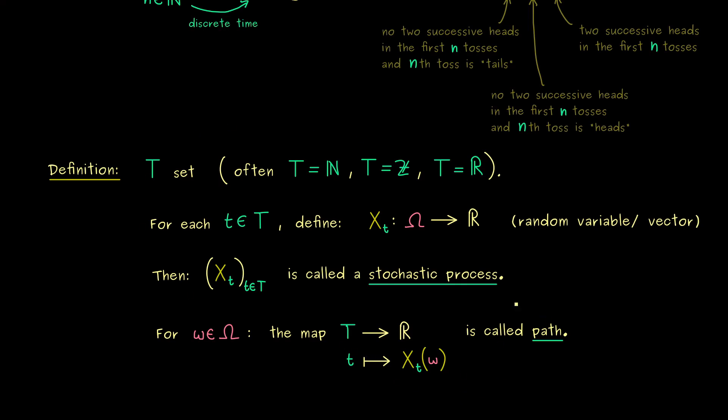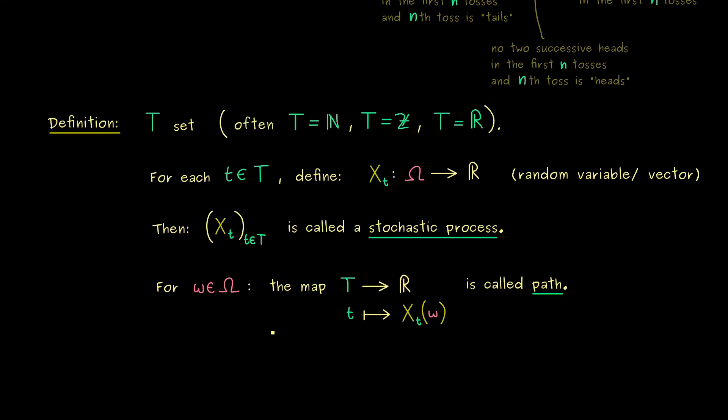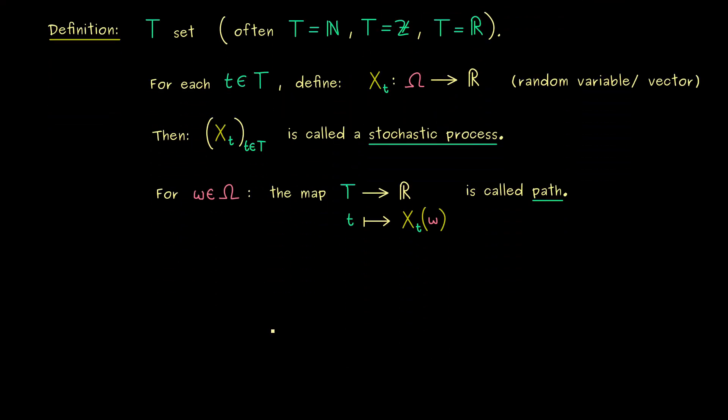So there we have it. This is the definition of a stochastic process. And you immediately recognize it's a very general thing. Therefore let's make it concrete again and let's go back to our nice example from before.